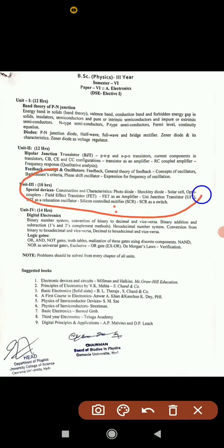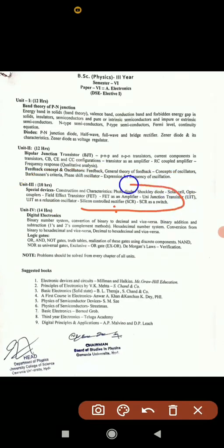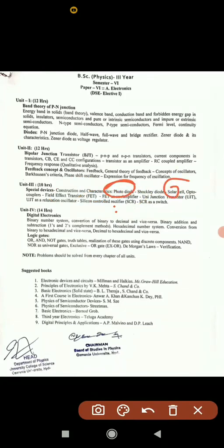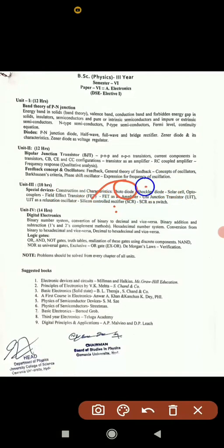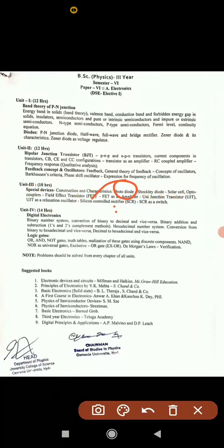Unit 3 is a newly added unit — it was not there last time. The important topics are silicon controlled rectifier, field effect transistor (FET), FET as an amplifier, photodiode, solar cell, Shockley diode, optocouplers, and UJT — totaling 6 components. If you read 3 or 4 of these components, you will get one long answer.